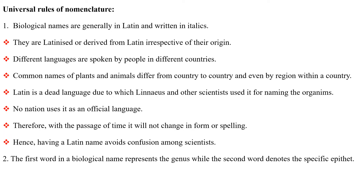Universal Rules of Nomenclature: Biological names are generally in Latin and written in italics. They are latinized or derived from Latin irrespective of their origin. Different languages are spoken by people in different countries, and common names of plants and animals differ from country to country and even by region within a country. Latin is a dead language, which is why Linnaeus and other scientists used it for naming organisms. No nation uses it as an official language, so with the passage of time it will not change in form or spelling. Hence, having a Latin name avoids confusion among scientists.